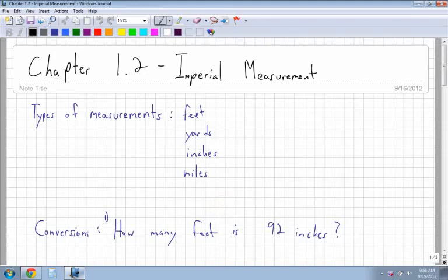Alright, for chapter 1.2, Imperial Measurement. The types of measurement you'll be dealing with for Imperial are feet, yards, inches, and miles. Things that are typically seen in the U.S., like miles, but also in Canada, like inches that we use for construction. We also think in terms of feet when we're thinking of how many square feet is a house. Not so much yards.